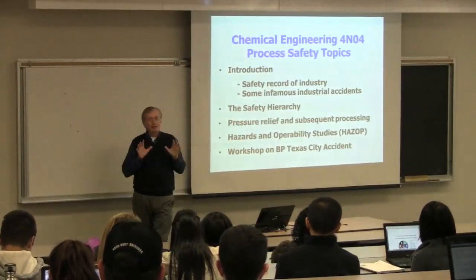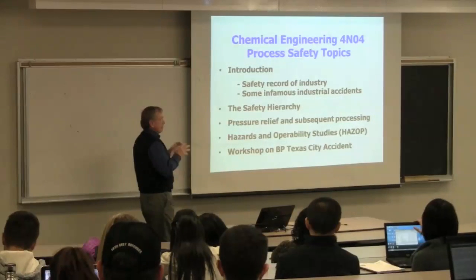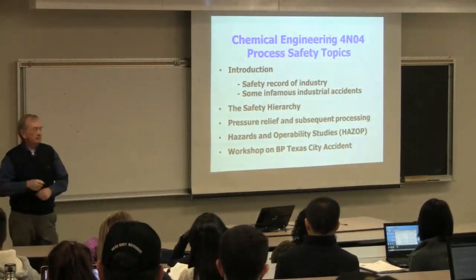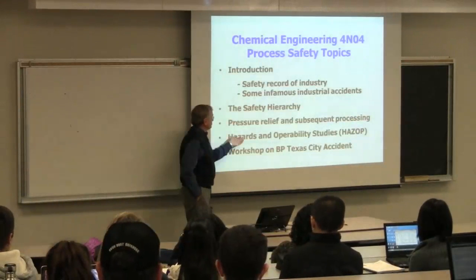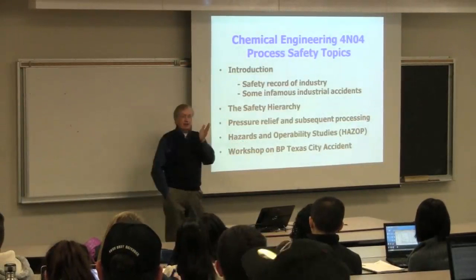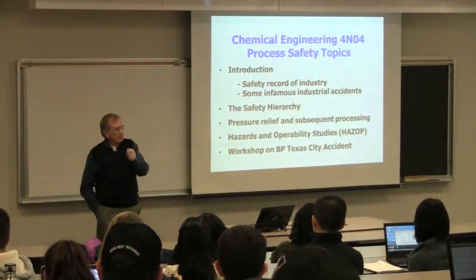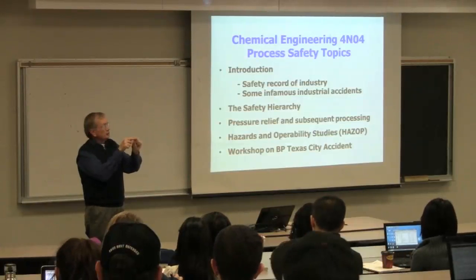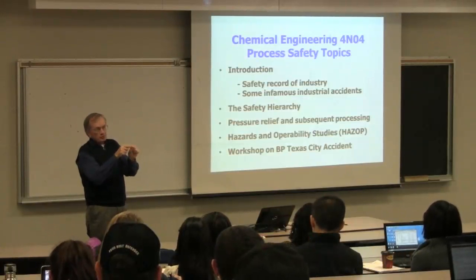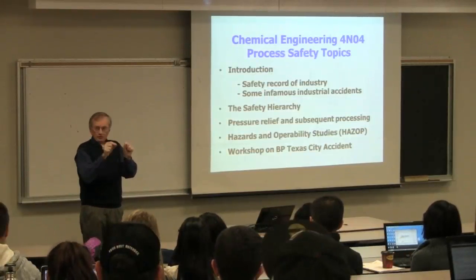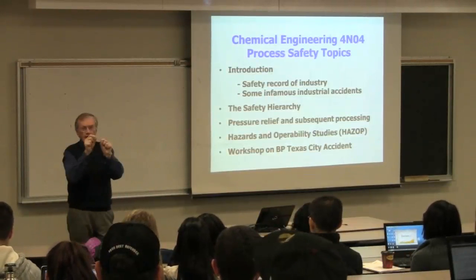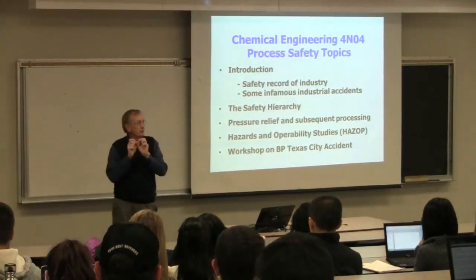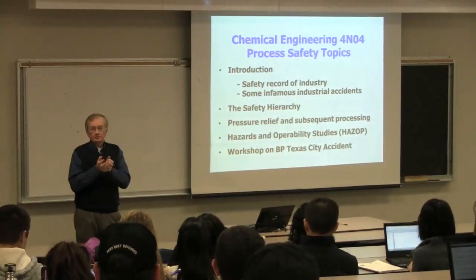After we understand what can go wrong, we're going to look at some solutions — what do we add to a design to contribute to its safety? That's the safety hierarchy and pressure relief and subsequent processing. So we're going to have two lessons on the solutions. Then, we've got a whole toolkit of solutions. Where do we put them? Why do we apply an alarm here and a check-down system there? That's going to be in the hazards and operability settings — a systematic way to look at your process, go point to point and identify safety problems.